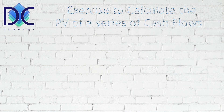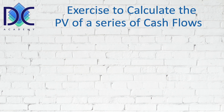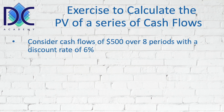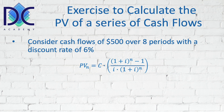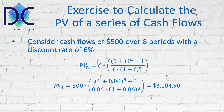Let's now calculate the present value using our example: $500 cash flows over eight periods at a discount rate of six percent. Applying the formula derived from the summation, we get: 500 × [(1.06^8 − 1) / (0.06 × 1.06^8)], which gives a total present value of $3,104.90.